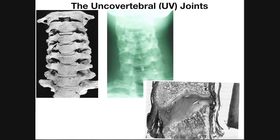In other words, this top part can move anteriorly over the inferior part of the disc, or it can move posteriorly over the inferior part of the disc. So it allows some gliding movements, which is very important to the mobility of the cervical spine. Recall that the cervical spine has more mobility than any other part of the spine, including the lumbar spine.